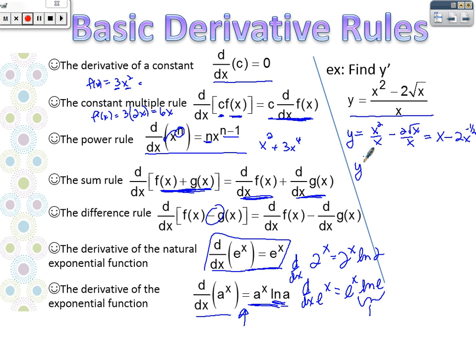you think about this as x to the 1/2 over x leaves me x to the negative 1/2. So my derivative, the derivative of x is 1. The derivative of negative 2x to the negative 1/2, I would bring that negative 1/2 down and multiply it by negative 2.